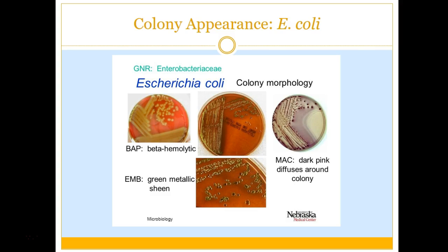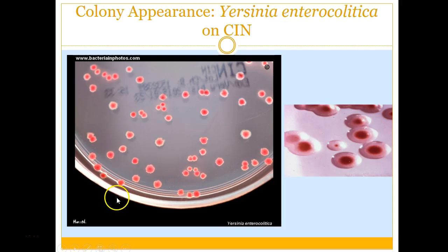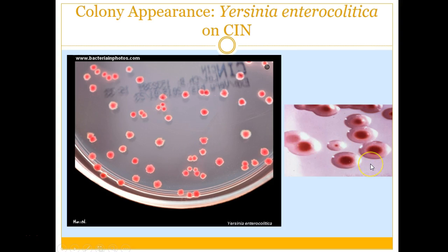EMB agar is used for the same purposes as MacConkey agar — it grows gram-negative rods. When E. coli grows on EMB agar, it gets a really unique green metallic sheen to it. Yersinia pestis has more of a cauliflower appearance after a few days. Yersinia enterocolitica produces those bullseye colonies on CIN agar. Here are the bullseye colonies — you can see in the close-up how they look like bullseyes.